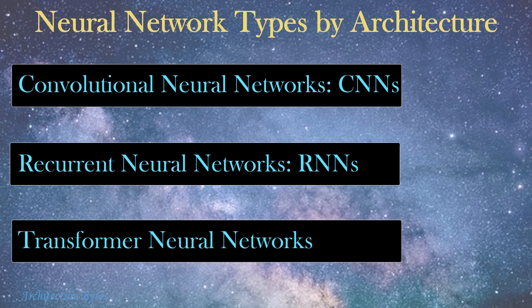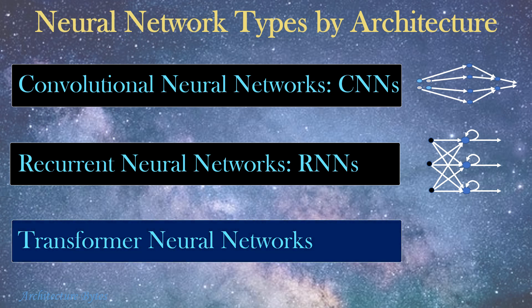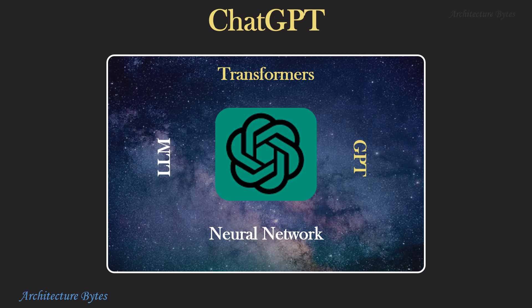Here are some types of neural networks: convolutional neural networks (CNNs), recurrent neural networks (RNNs), and transformer neural networks. CNNs are structured like a grid where a neuron may be connected only to nearby neurons; they are well suited for image recognition. RNNs allow output from some nodes to affect subsequent input to the same nodes. Our focus here is transformer neural networks, since ChatGPT is powered by one.